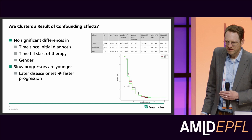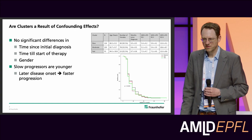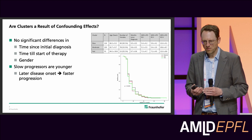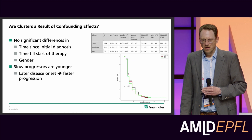Of course, one can ask whether these clusters are a result of confounding effects, so we made a number of checks. We looked into time since initial disease diagnosis, time since start of therapy, gender differences, and age. In essence, we can see no statistically significant difference in any of these parameters. What we do see, however, is that patients in the slow-progressing group are typically younger, meaning a later disease onset is somewhat correlated with faster progression — as also proposed in the literature.